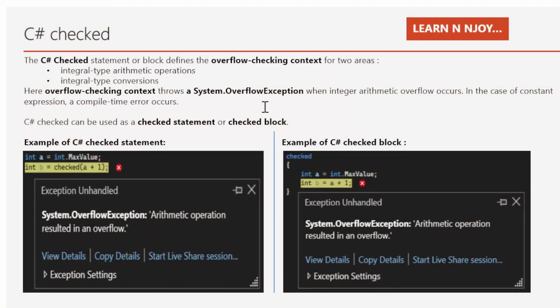What is the checked keyword in C#? The C# checked statement or block defines the overflow checking context for two areas: number one, integral type arithmetic operations, and number two, integral type conversions — for example, when we convert double to int.